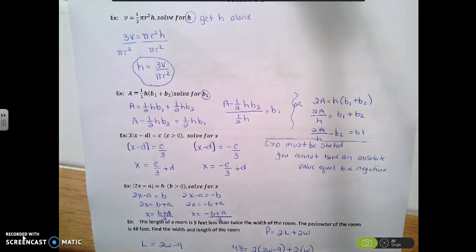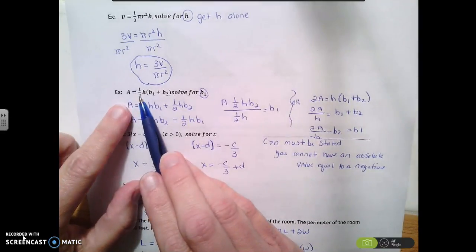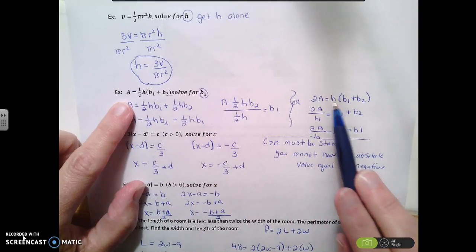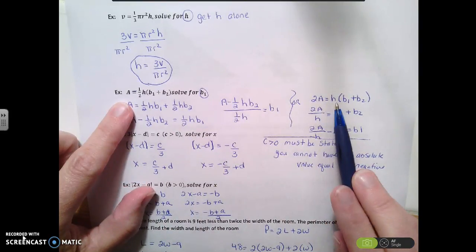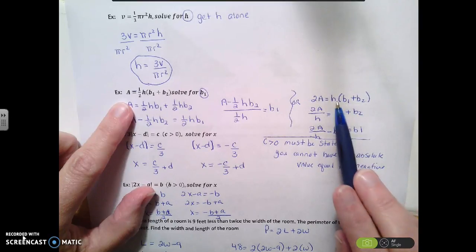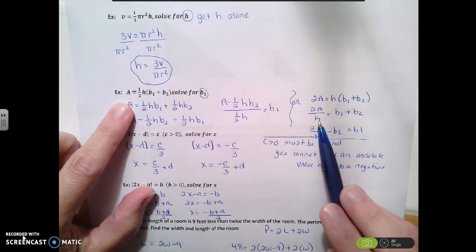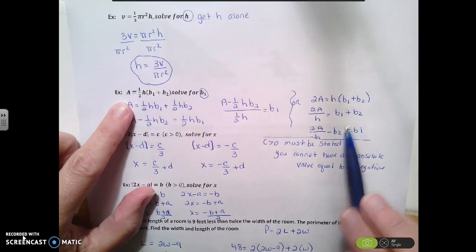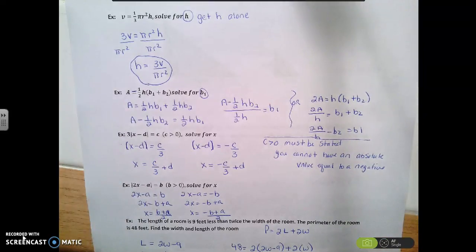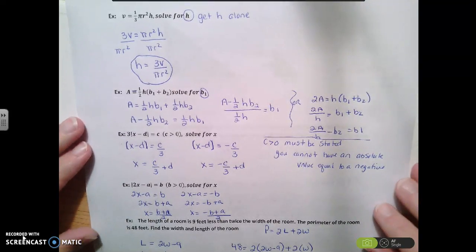Or, another way to approach it. When I've got this fraction that I don't like, I can multiply both sides by two. So if I do that, I end up with 2a equals hb1 plus b2. And then I can divide by that h, and I end up with this. And then I can subtract the b2, and I get this solution. So both solutions would be right, and there are probably other ways to do it too, but those are just two options.